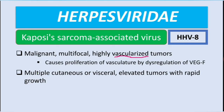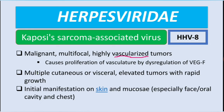It causes multiple cutaneous or visceral lesions, which can be elevated or flat with rapid growth. These lesions can also be found in the GIT. Initial manifestations are on the skin and mucosa, especially on the face, oral cavity, and chest.